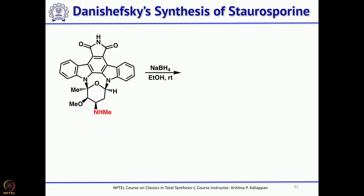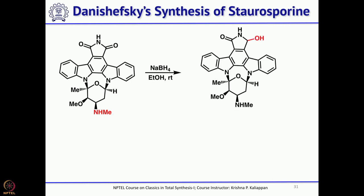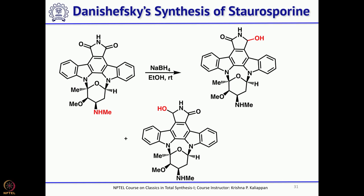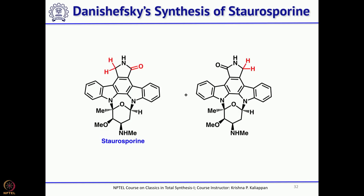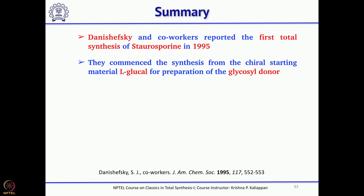He reduced with sodium borohydride. It was known that for similar compounds, sodium borohydride can reduce one carbonyl to the corresponding alcohol (amidol). However, he got a mixture of both carbonyls reduced in a 1:1 ratio with no selectivity. He moved ahead and treated with phenylseleninic acid in the presence of catalytic para-toluenesulfonic acid, which cleaved the C-OH bond and replaced with hydrogen, giving a mixture of naturally occurring staurosporine and its other isomer in 1:1 ratio.